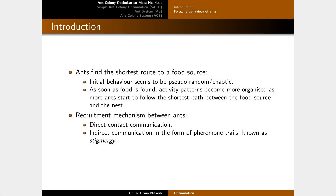I'm sure you've seen that ants tend to find the shortest route to a food source. The initial behavior of ants seems quite random or chaotic — a single ant on your desk seems totally unaware of its surroundings. But the moment it finds food, imagine a plate of leftover cake on the kitchen table, then all of a sudden in a matter of minutes there's a trail of ants going directly for the food. There must be some recruitment mechanism — this could happen through direct contact communication, which is somewhat rare, but indirect communication in the form of pheromone trails, known as stigmergy, is quite common.